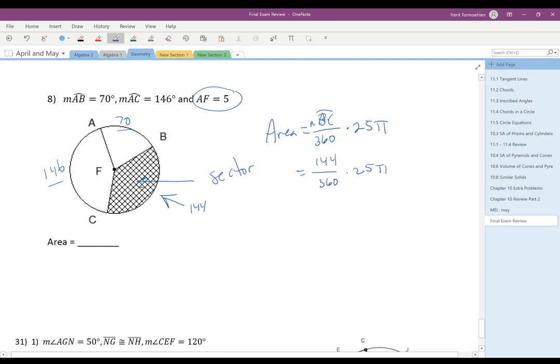It turns out that 144 over 360 has a nice simplification because 72 goes into both of them. So it's just two-fifths times 25π, and that equals 10π. The correct answer to number eight is 10π.